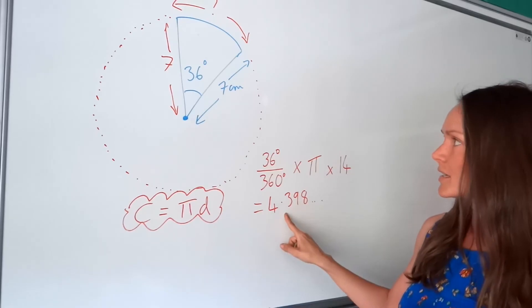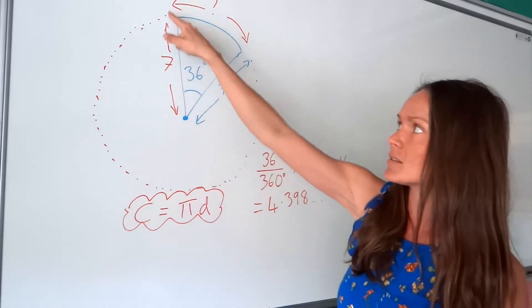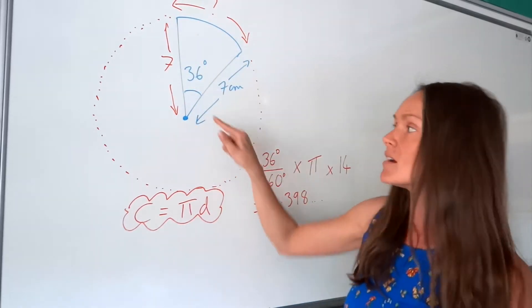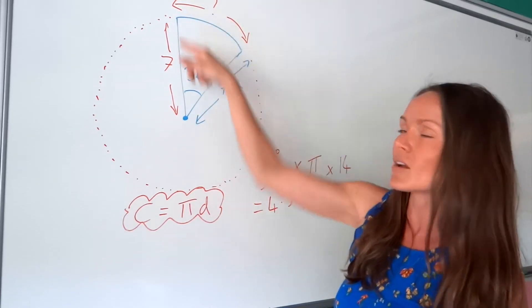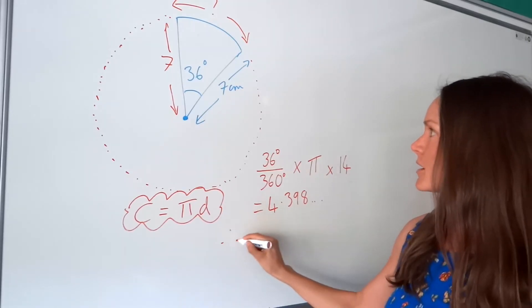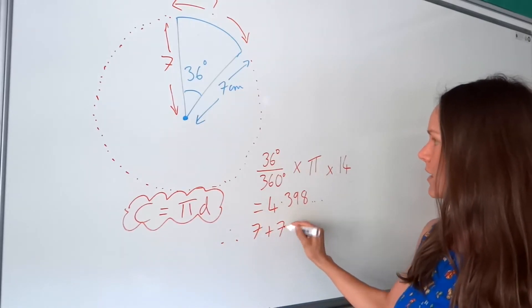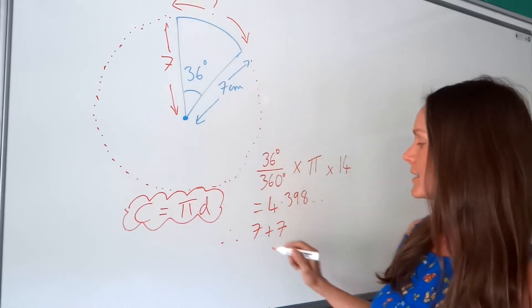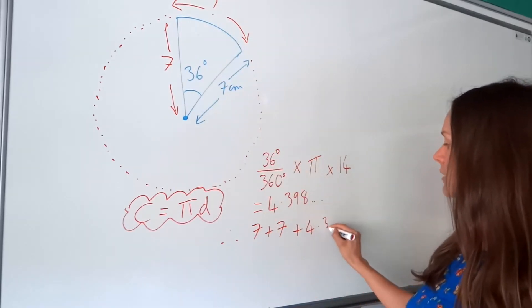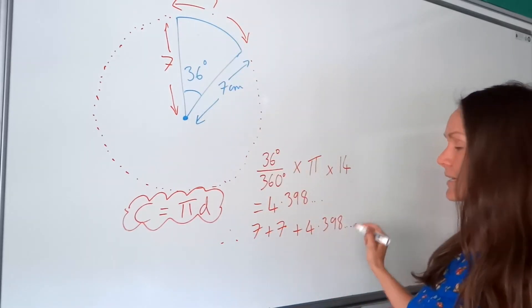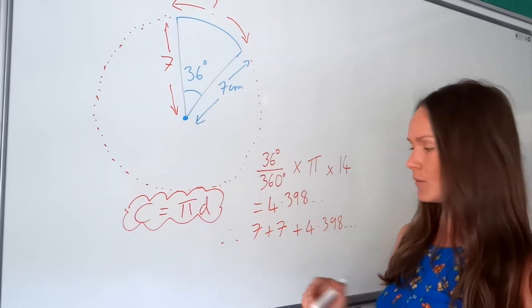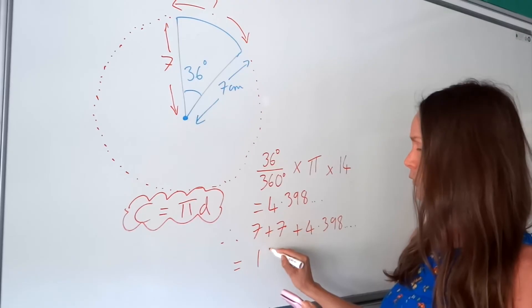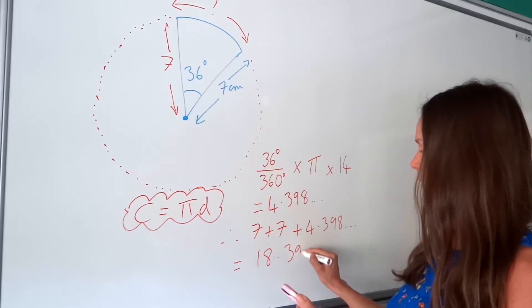So not forgetting, we need to add on the straight parts, these parts here, because the perimeter is the distance all the way around the outside. So there are three sides we need to add together. So we've got 7 plus 7 from earlier, the radius, and then again the radius, plus this number that you should just leave on your calculator screen for the moment. So add those 7s on and it will give you the final perimeter. So 18.398.